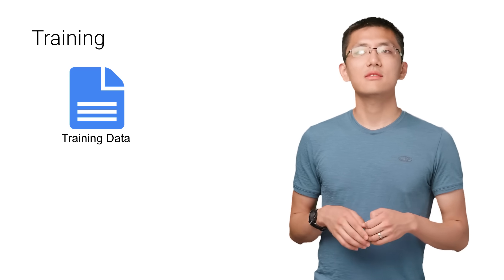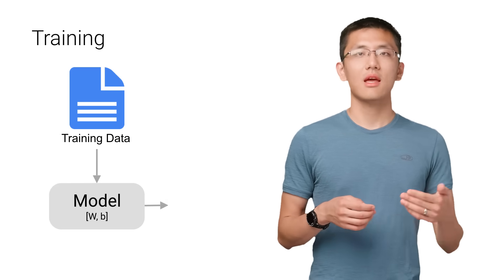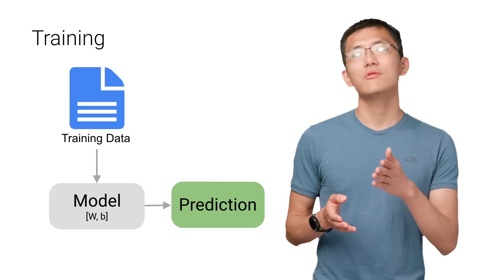The training process involves initializing some random values for w and b, and attempting to predict the outputs with those values. As you might imagine, it does pretty poorly at first.